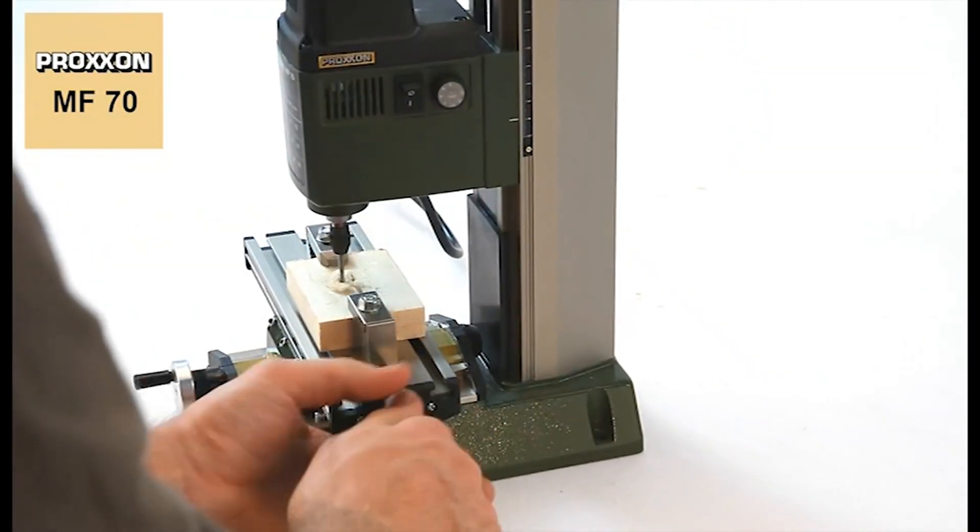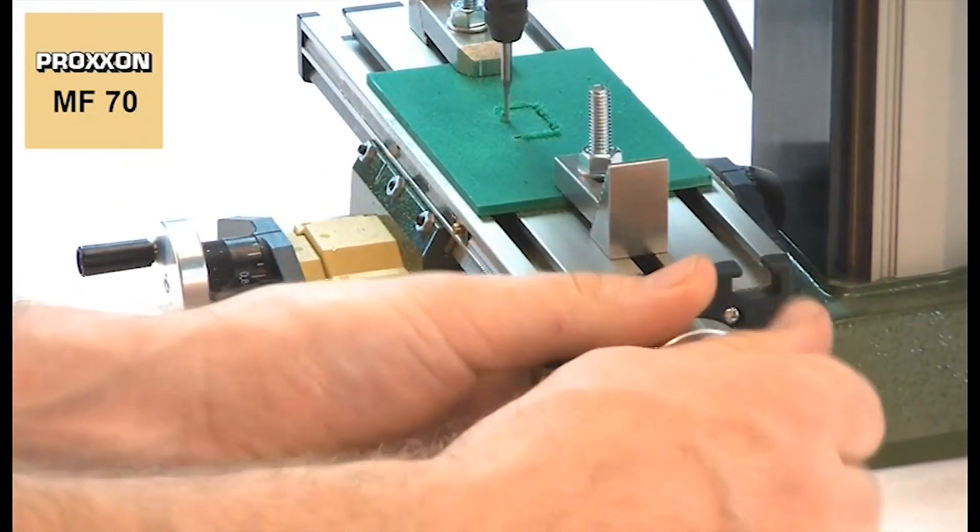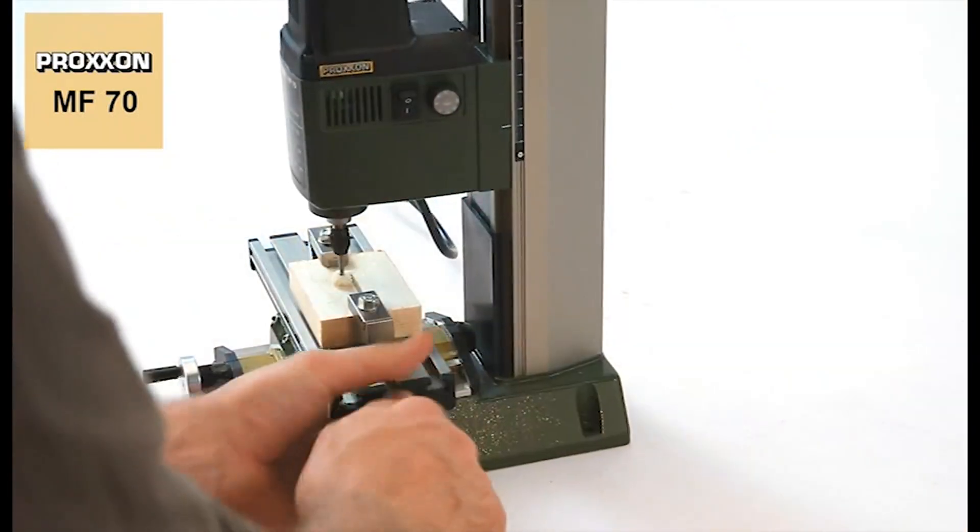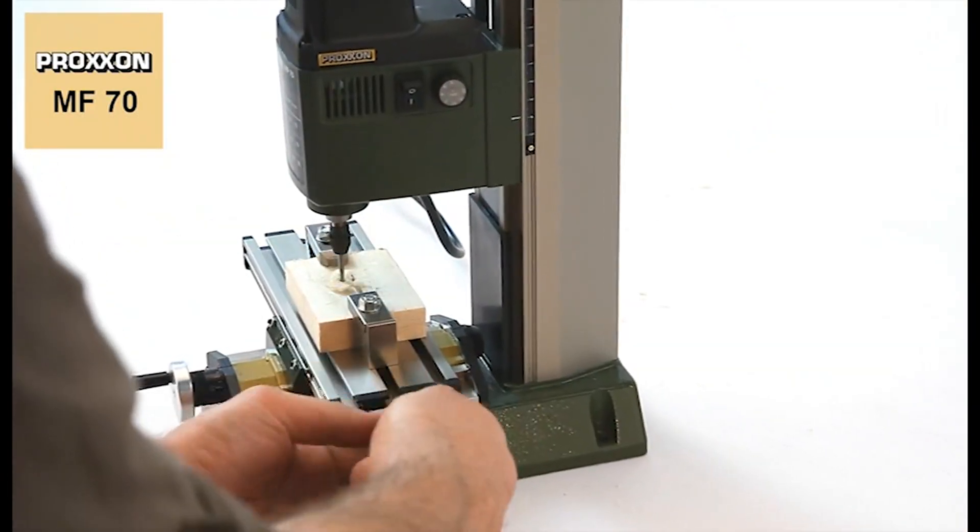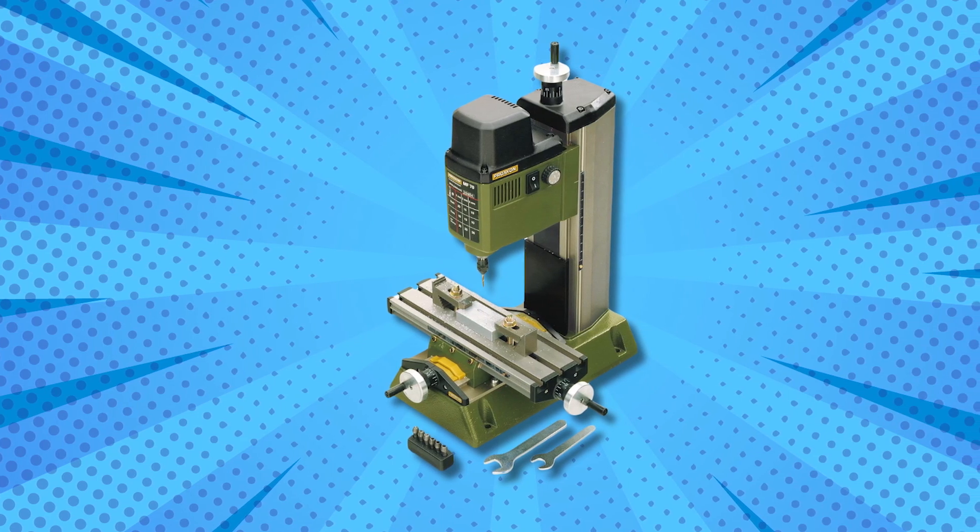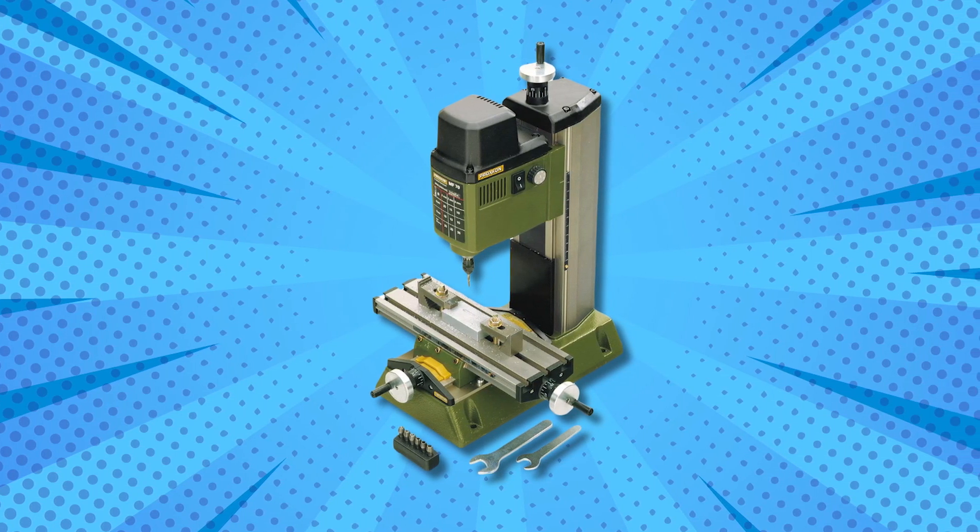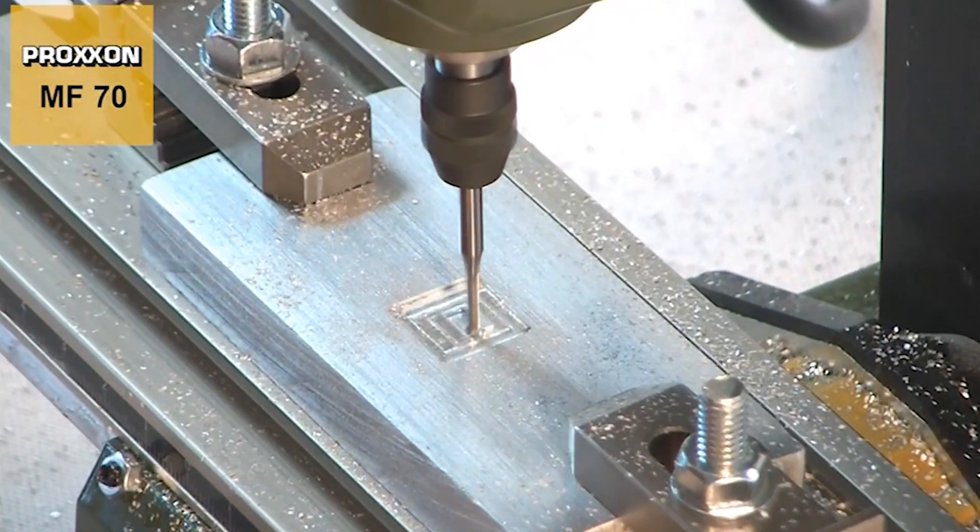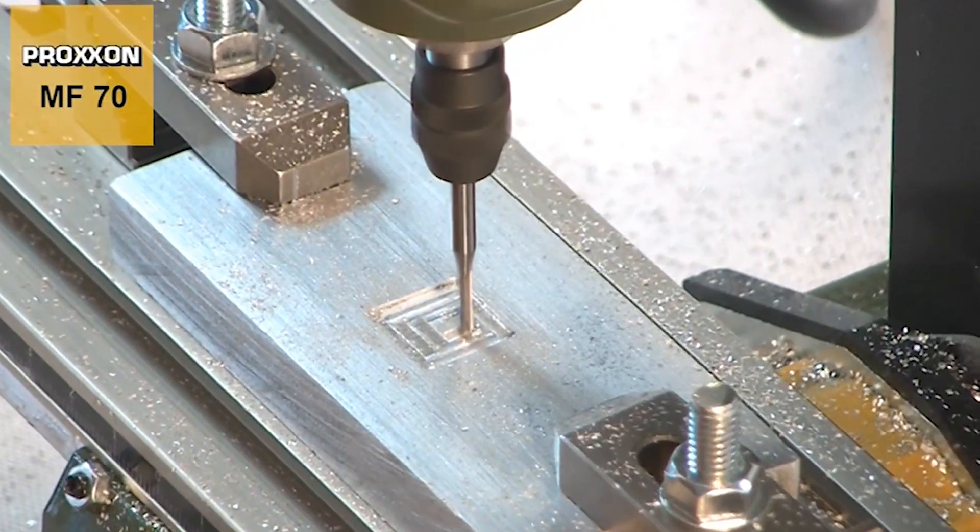It offers XY travel of 5-1/8 by 6-1/4 inches, with a vertical travel of 1-13/16 inches, while the vertical travel reaches 2-3/4 inches. The machine's overall dimensions are 5-7/8 by 8-55/64 inches, weighing approximately 15.5 pounds.